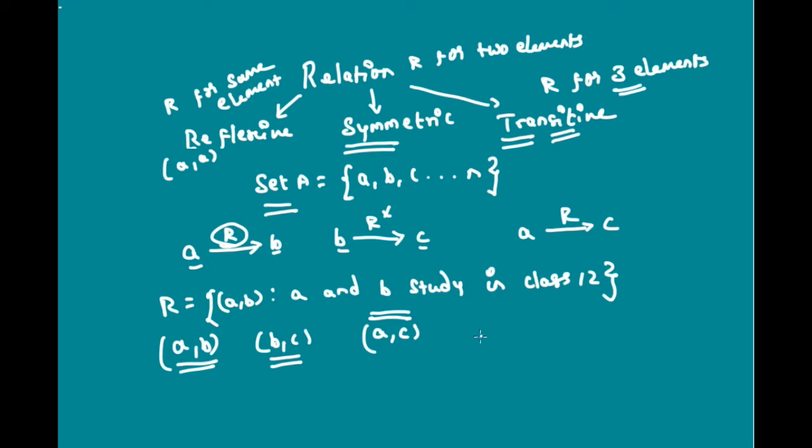A given relationship R can satisfy reflexive conditions, symmetric condition, and also transitive condition. This is possible. In such a case, this relation R is known as an equivalence relation.